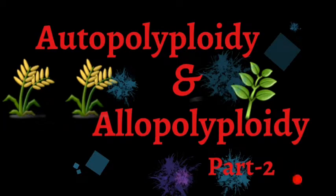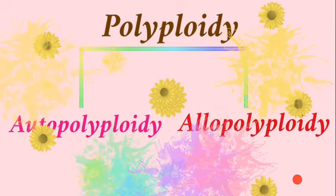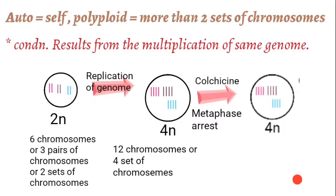Welcome to this video tutorial where we'll talk about autopolyploidy and allopolyploidy. In the previous video we discussed polyploidy — the condition where an organism has more than two sets of chromosomes. Polyploidy is further subdivided into two types: autopolyploidy and allopolyploidy. We will discuss these two types one by one.